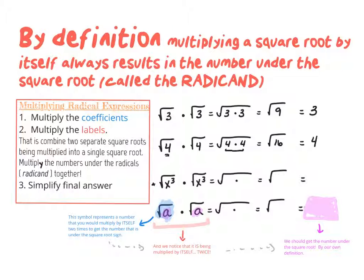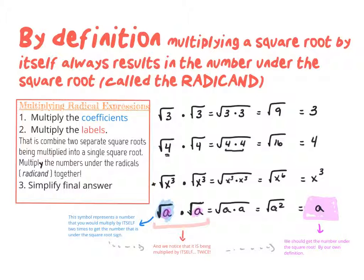The same works with variables: the square root of x³ times the square root of x³ gives the square root of x⁶, which is just x³. In general, if I take the square root of a and multiply it by itself, I always get the original number a. Conceptually, the square root symbol represents something you would multiply by itself to get the number under the radical — so when you multiply it by itself, you get that number.